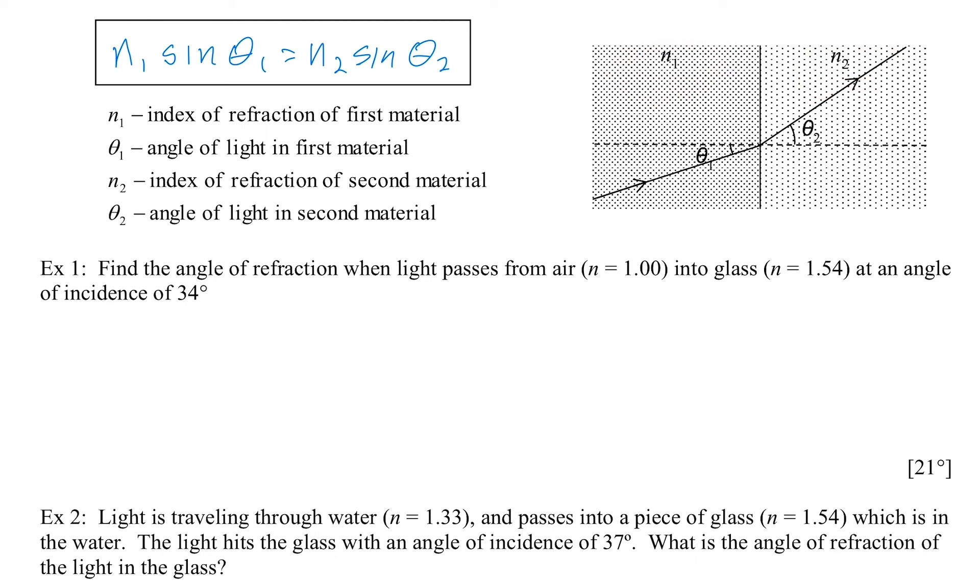Depending on how optically dense a material is, that affects the angle in each of the materials. This example here is showing you that it's going from a more optically dense material to a less optically dense material, so the light is going to bend away from the normal line.